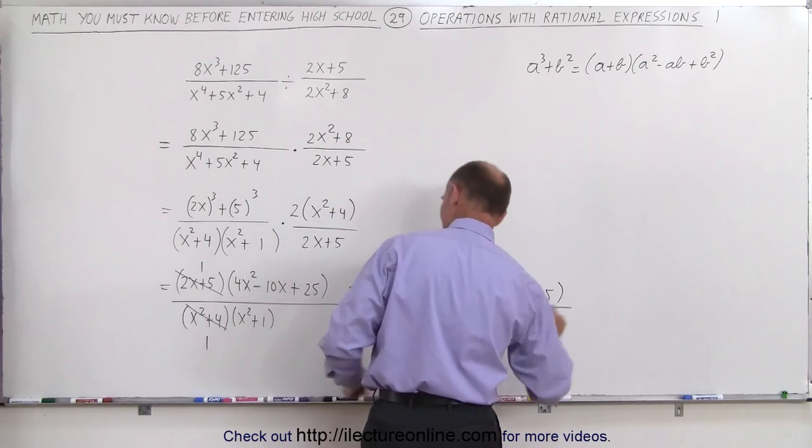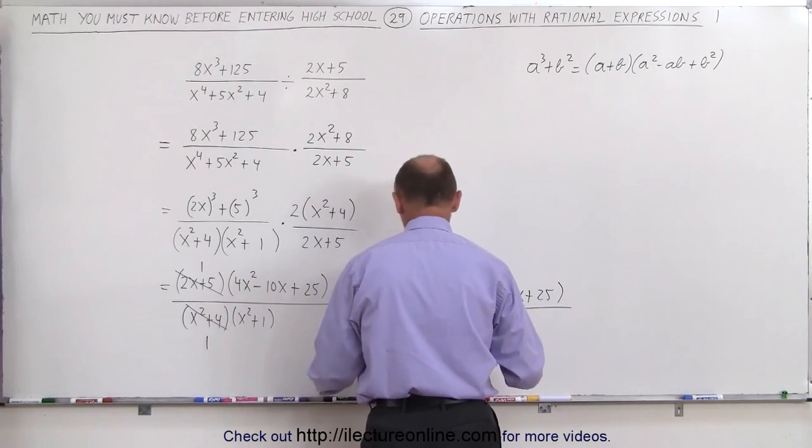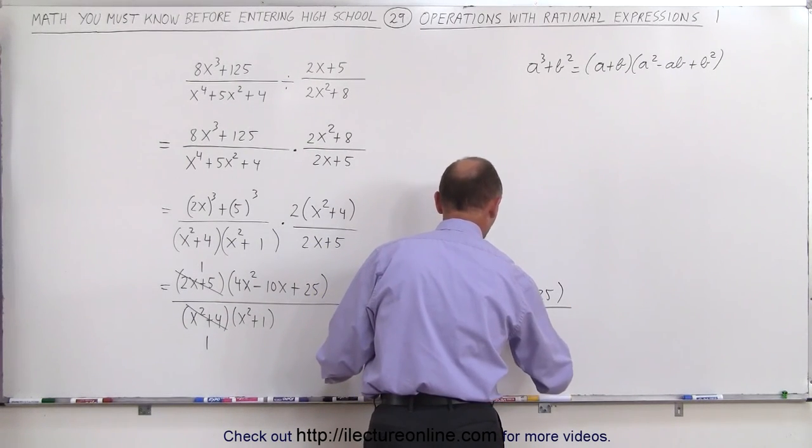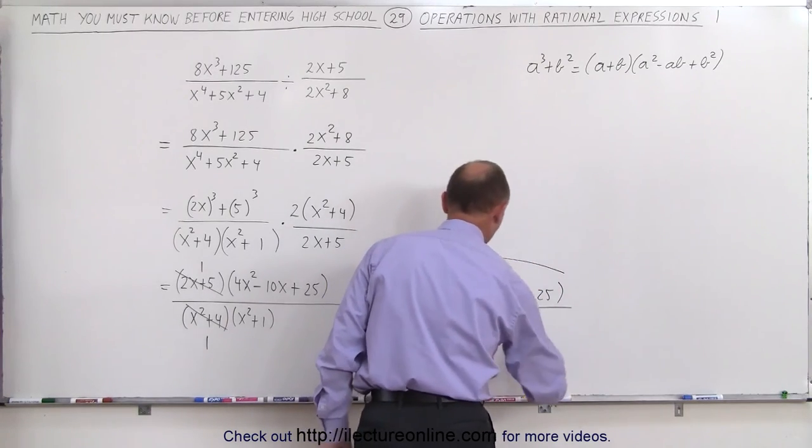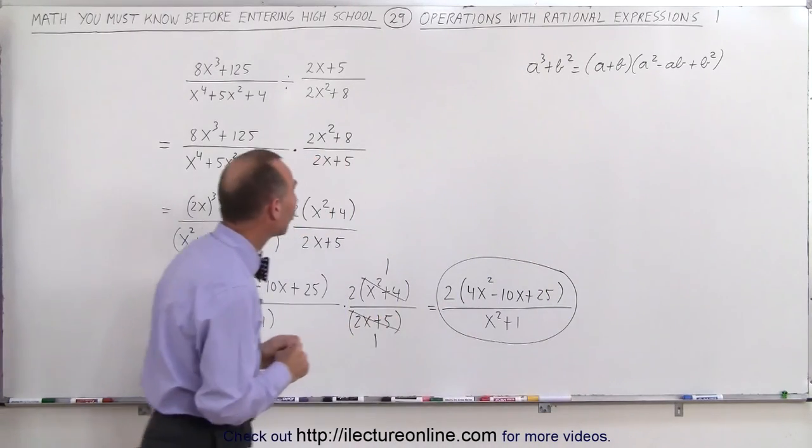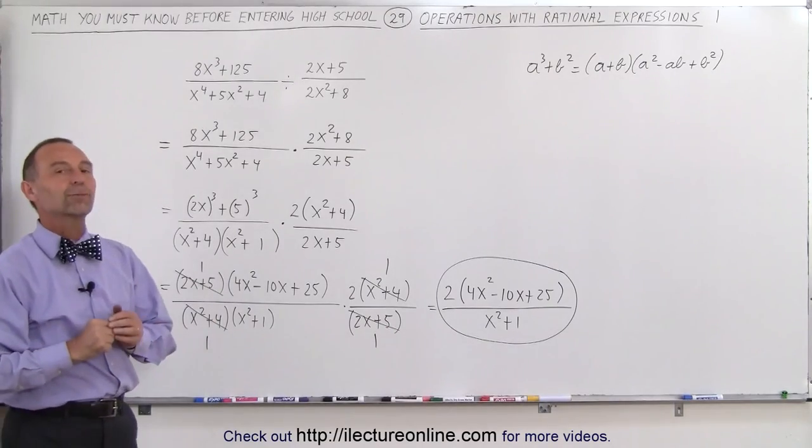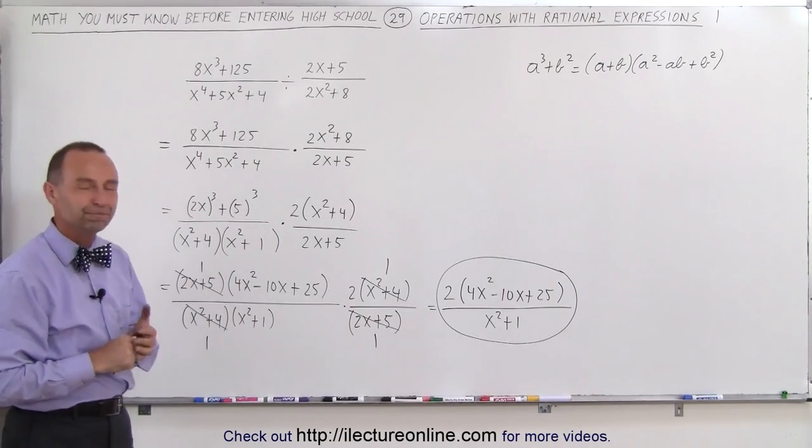It's an x squared plus 1. Can't forget about that one. We still have 1 times this times this, which is x squared plus 1 in the denominator. And this is the final simplest form of this rational expression. And that's how it's done.